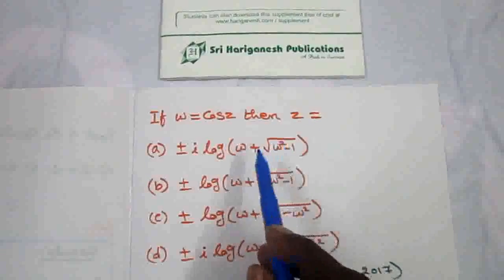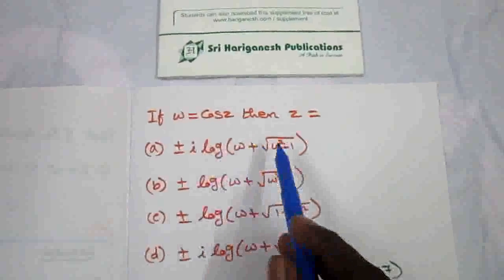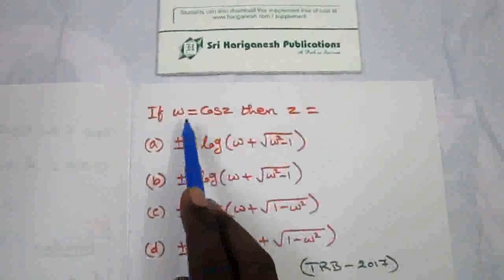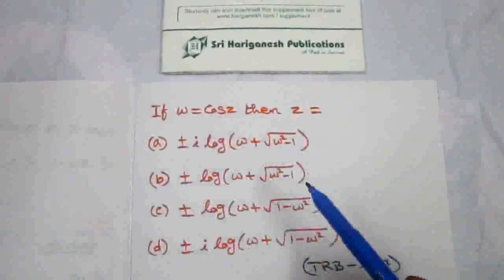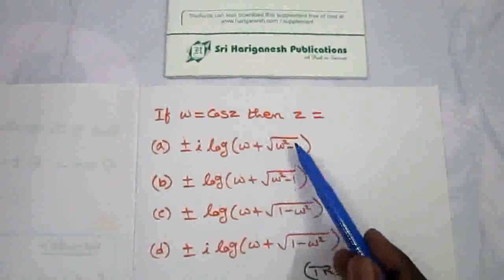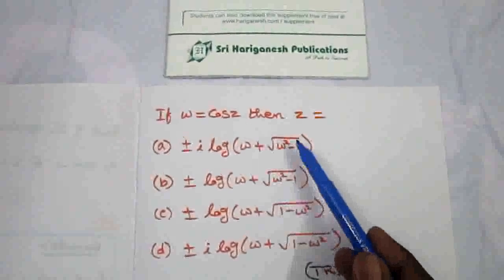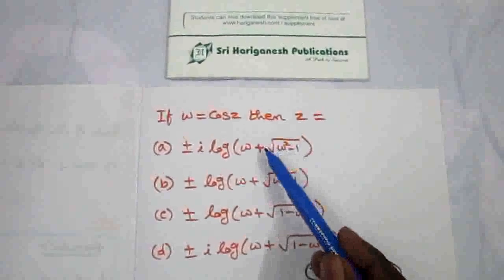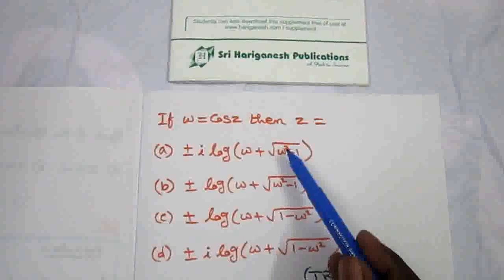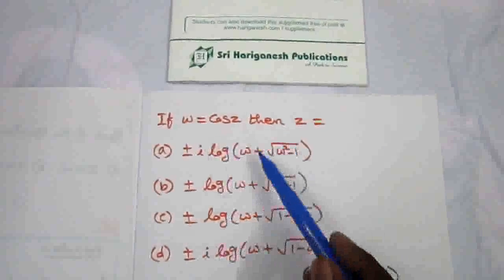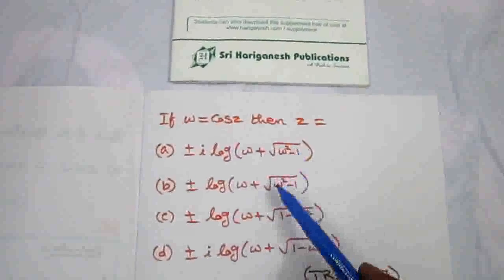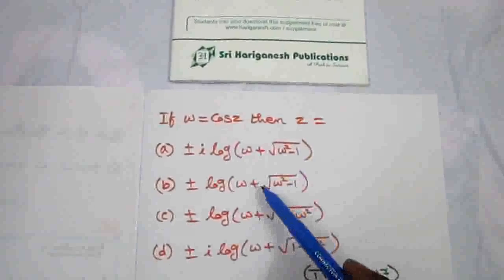First, I am going to convert the log inside term — it becomes cos plus i sine. But given w is equal to cos z, when you substitute cos here, cos squared z minus 1 becomes minus sine squared z. So this will give i sine z, because root of minus 1 is i, and root of sine squared z is sine z. So this value gives plus i sine z.